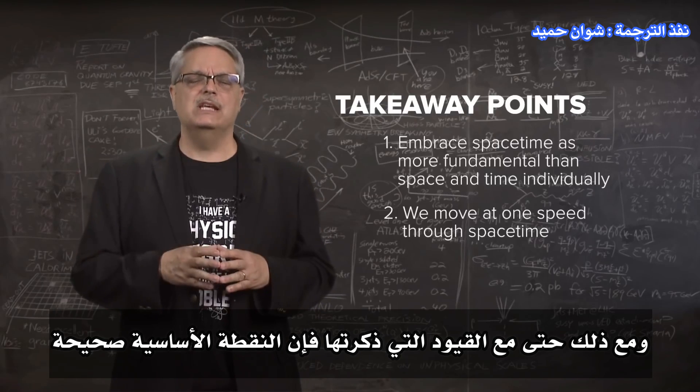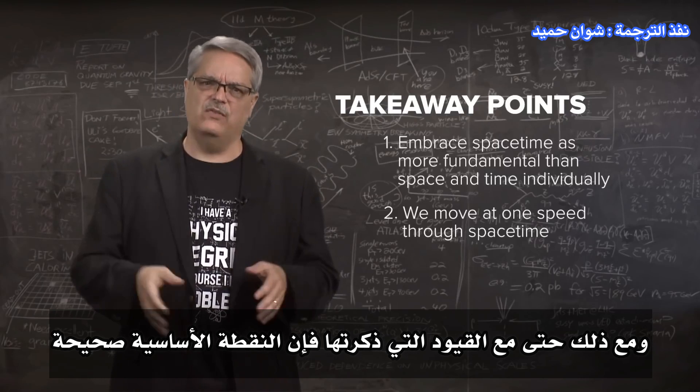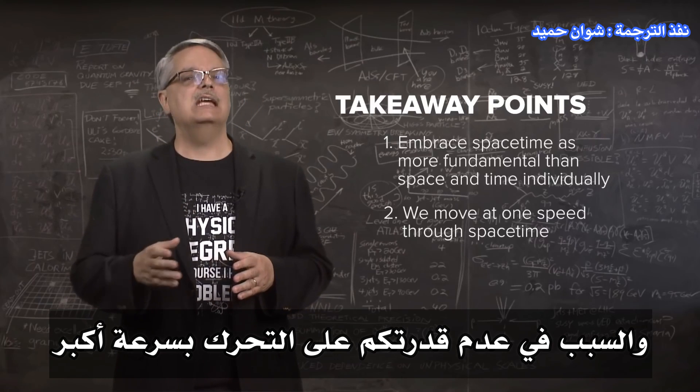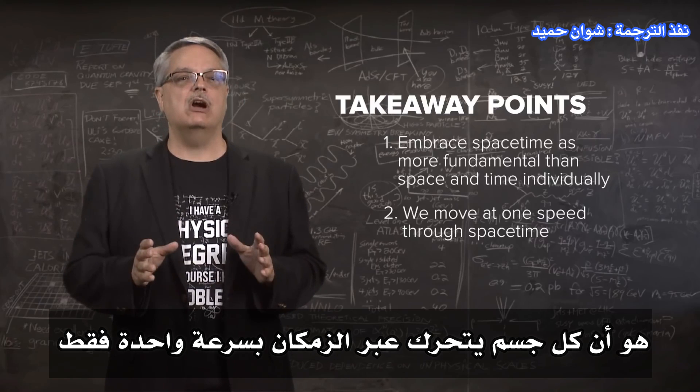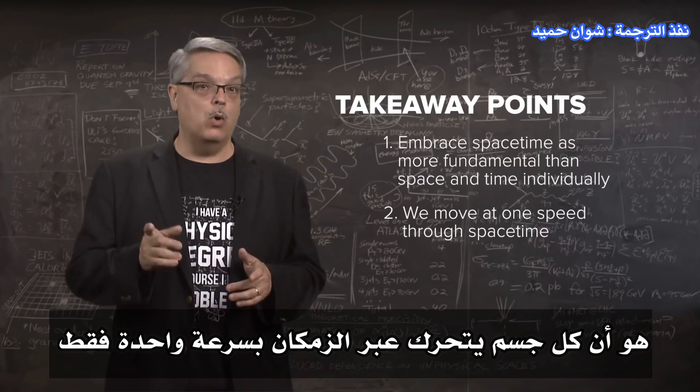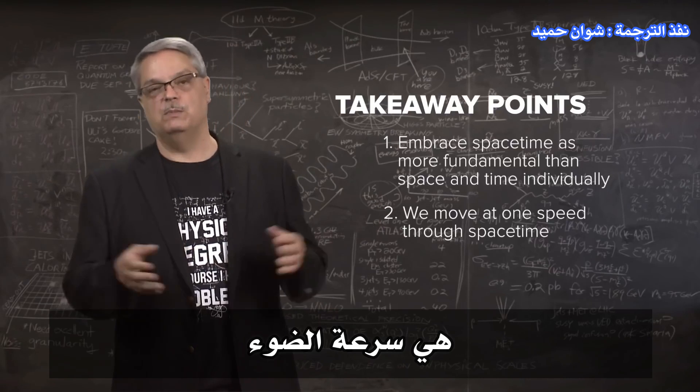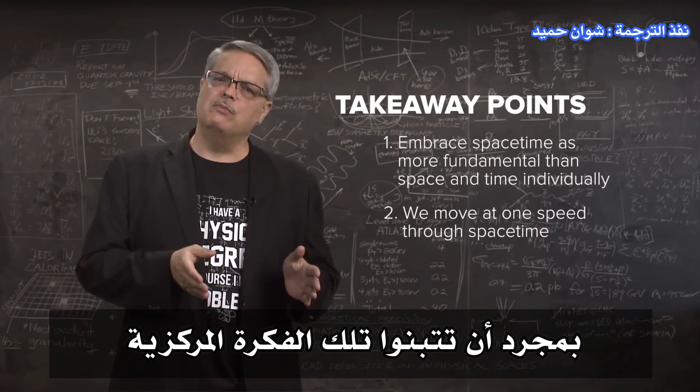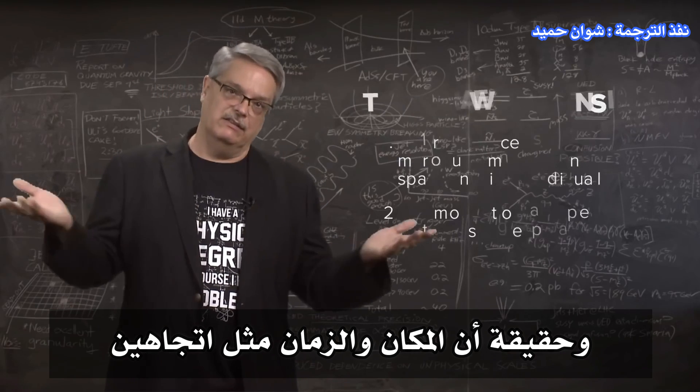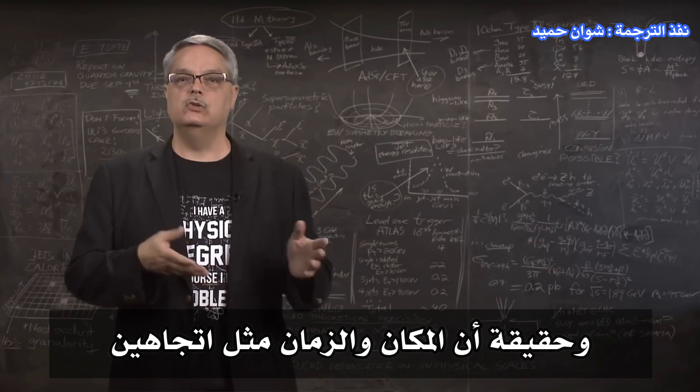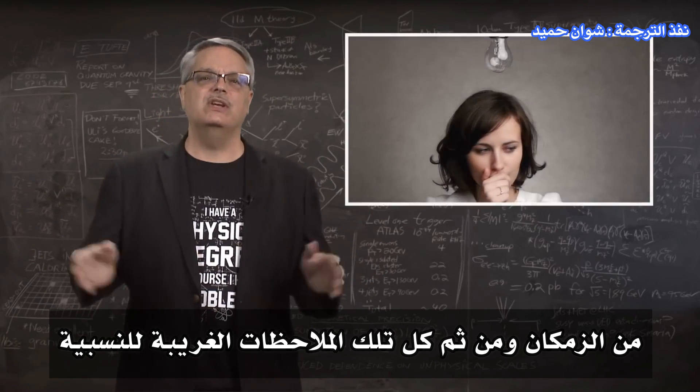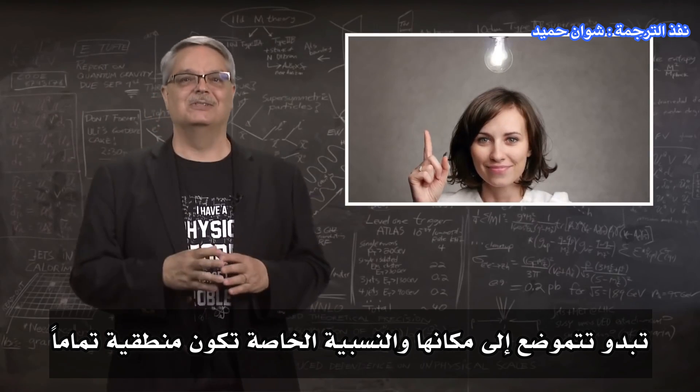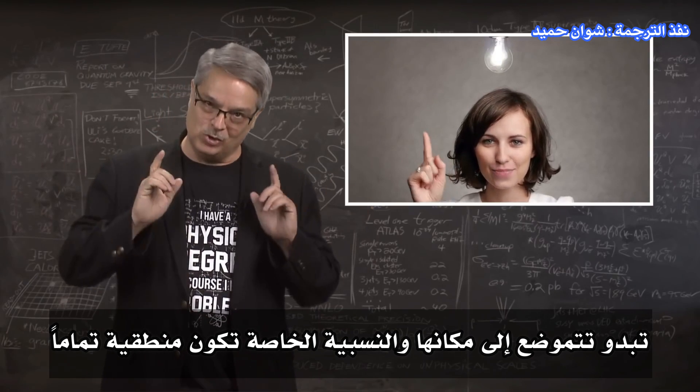Still, even with the limitations I've mentioned, the core point is valid. The reason you can't move faster through space than the speed of light is because every object moves through space-time at one and only one speed, the speed of light. Once you've embraced that central idea and the fact that space and time are just like two directions of space-time, then all those seemingly weird observations of relativity just click into place, and special relativity makes total sense.